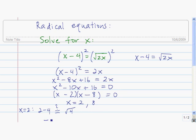2 minus 4 is negative 2. The square root of 4 is 2. Negative 2 does not equal positive 2. So that means that 2 here is an extraneous solution, so it's not a solution to the original equation.